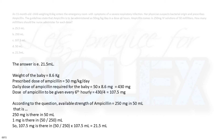Weight of the baby equals 8.6 kg. Prescribed dose of ampicillin equals 50 mg per kg per day. Daily dose of ampicillin required equals 50 times 8.6 mg, which equals 430 mg. The dose to be given every 6 hours equals 430 divided by 4, which equals 107.5 mg.